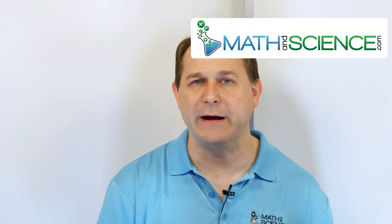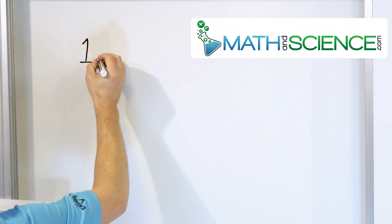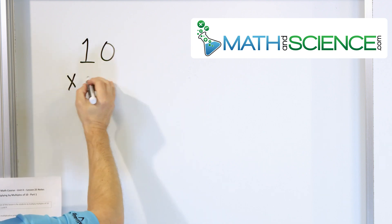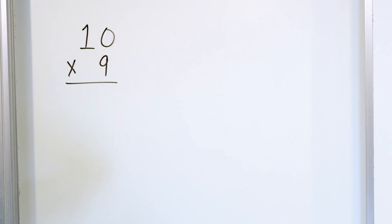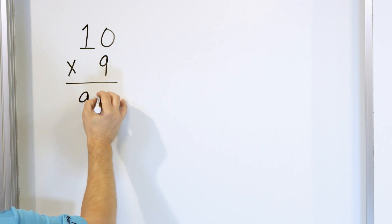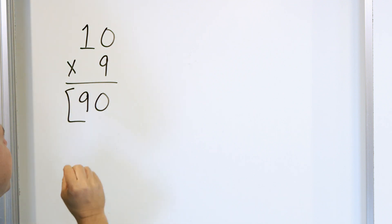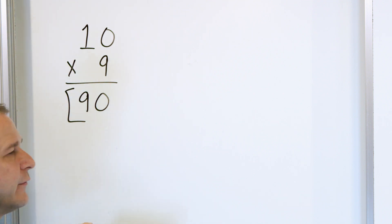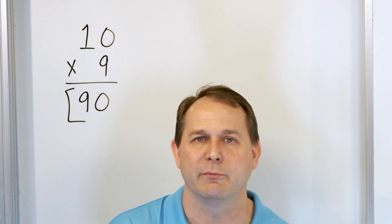Let me show you something you might not have thought about, which will help us learn to multiply even bigger numbers together. Let's take a look at the example 10, and we're going to multiply 10 times 9. You know the answer because it's in our multiplication tables — 10 times 9, the answer is 90. But let me show you a different way to get the answer that will help us multiply even bigger numbers together.